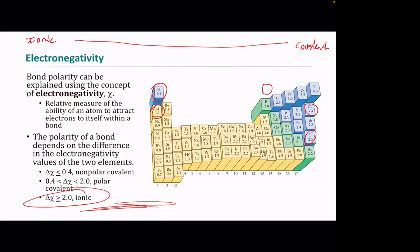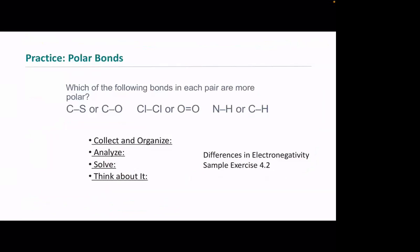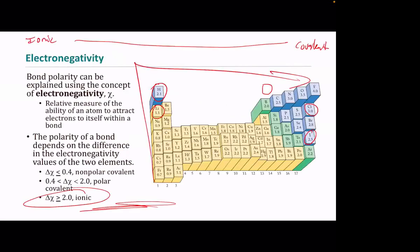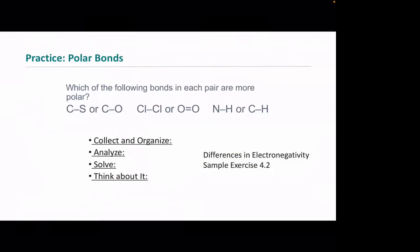Let's practice: which bond in each pair is more polar? C-S versus C-O? You can use the periodic trend — electronegativity increases up and to the right. Oxygen is more electronegative than sulfur, so the C-O bond is more polar than C-S. You don't need the numbers, just learn the trend.